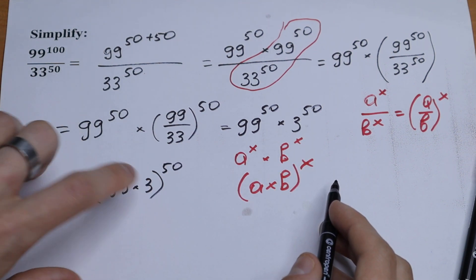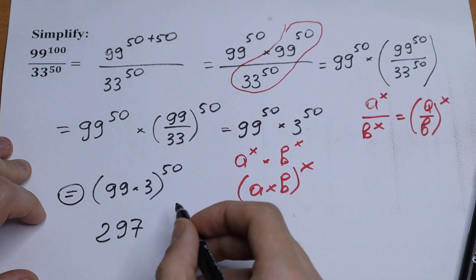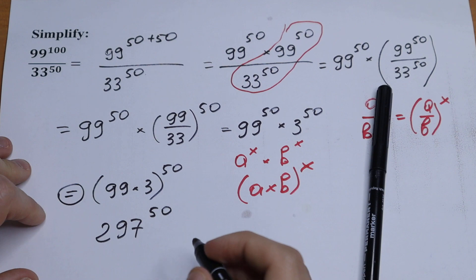Last step, multiplying this we will have 297 to the power 50. And this will be our answer.